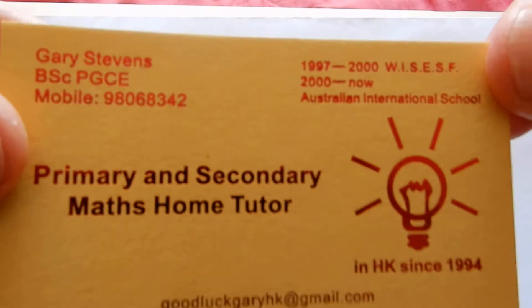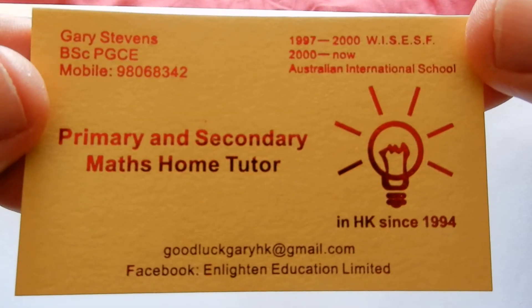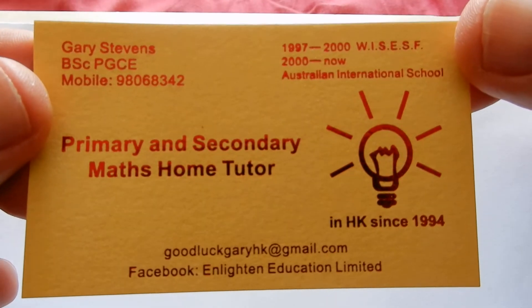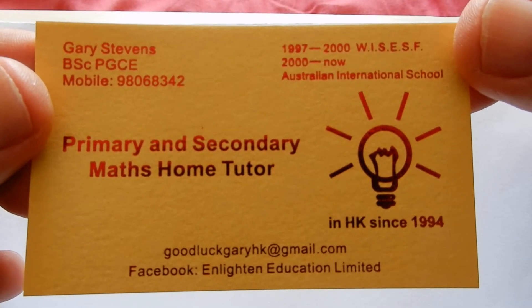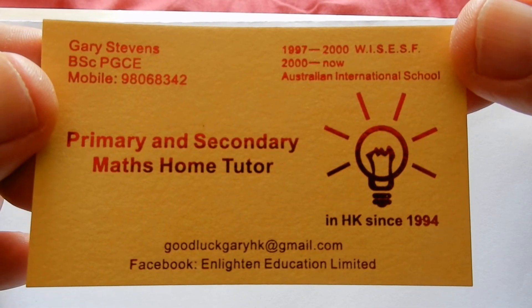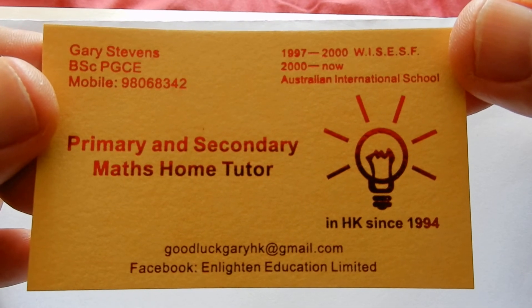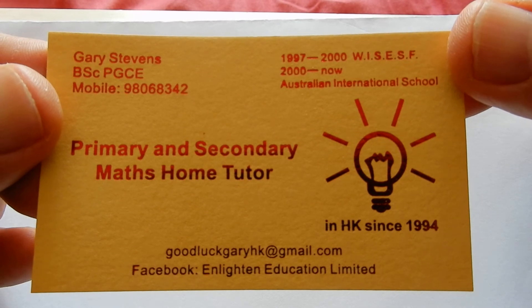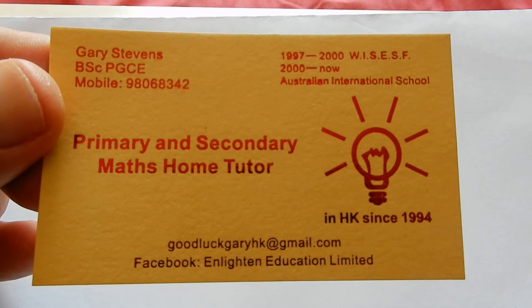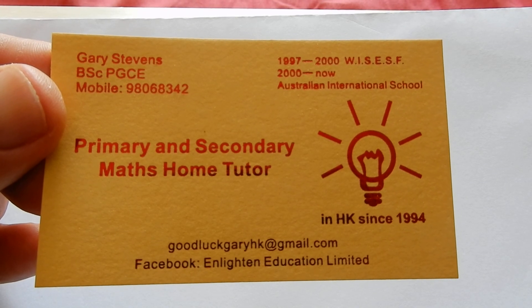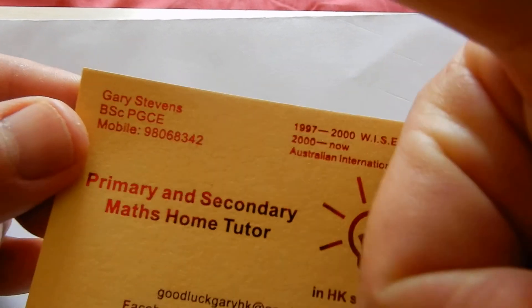Here's my card. If you're in Hong Kong, that's how to get me. My mobile phone is 98068342. I'm a teacher at the Australian International School. I used to work in the ESF English Schools Foundation at West Island School. I'm a teacher in the daytime, I'm a tutor in the evenings. I come to your home and I help you with your maths. This is Gary Stevens. Good luck. Gary HK at gmail.com. Bye.